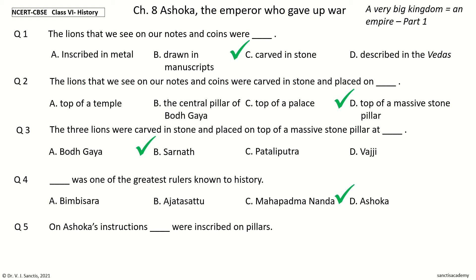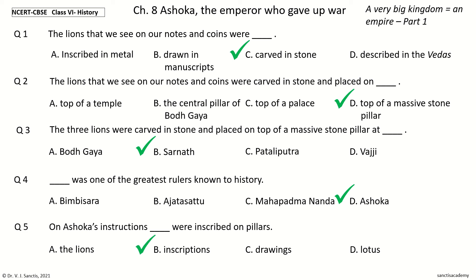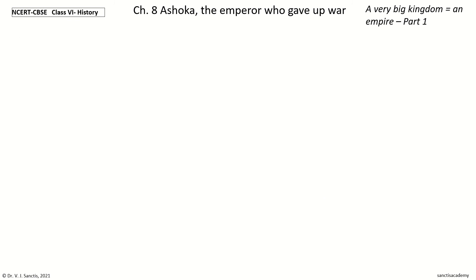Question 5: On Ashoka's instructions, blank were inscribed on pillars. The options are: the lions, inscriptions, drawings, lotus. The answer is inscriptions. So on Ashoka's instructions, inscriptions were inscribed on pillars.